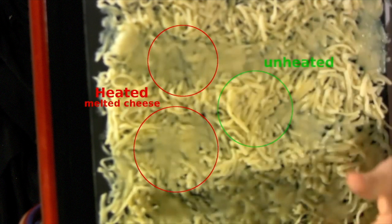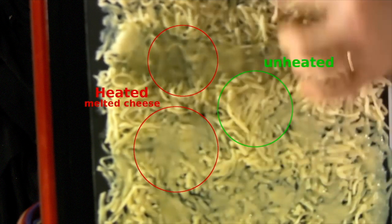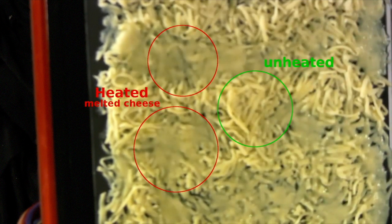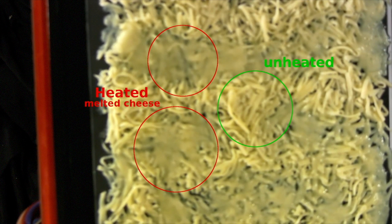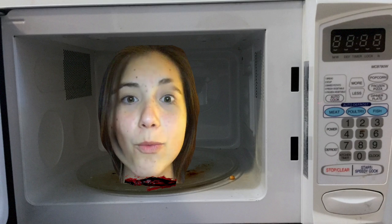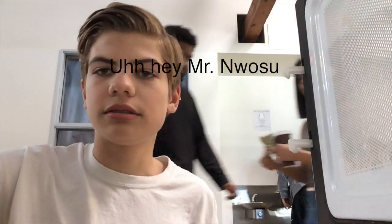Food could become unevenly heated because there are some spots on the food's surface where the nodes could not puncture it, causing it to not be heated in that area. Wow, that's really interesting.